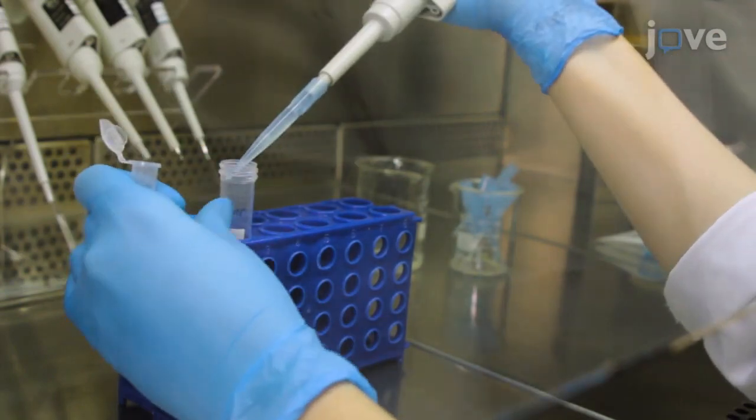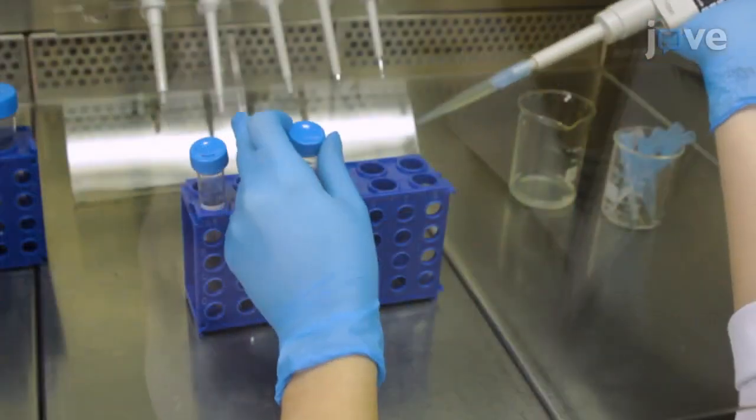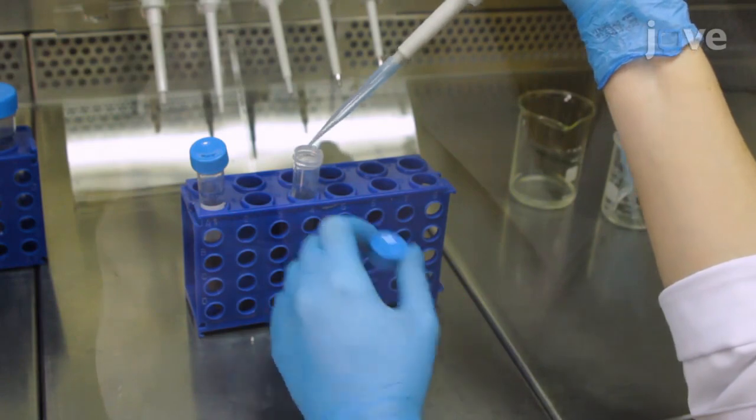Next, transfer the dissociated mixture to a 15 ml conical tube and add an equal volume of FBS to neutralize trypsin activity.